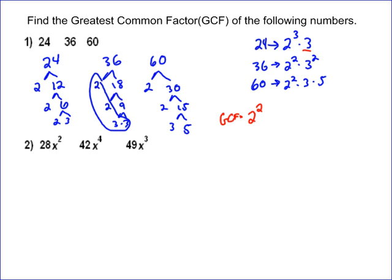We look at a 3. We only got one 3 here, but we do have a 3 in all of them. And so that's also part of it. And so our answer is 2 squared times 3.